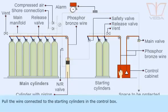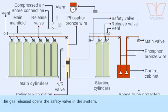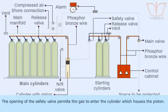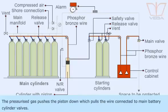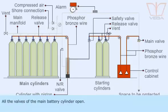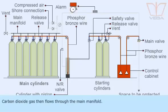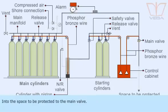Pull the wire connected to the starting cylinders in the control box. The gas released opens the safety valve in the system. The opening of the safety valve permits the gas to enter the cylinder which houses the piston. The pressurized gas pushes the piston down, which pulls the wire connected to the main battery cylinder valves. All the valves of the main battery cylinder open. Carbon dioxide gas then flows through the main manifold into the space to be protected through the main valve.